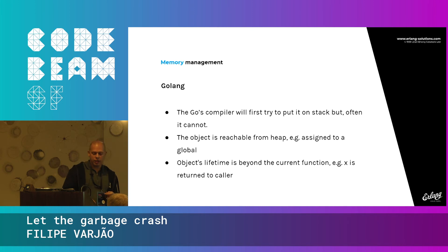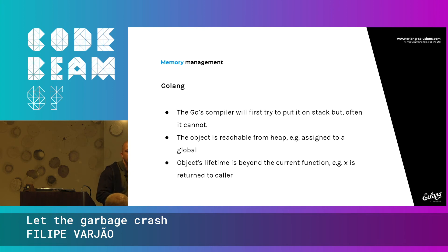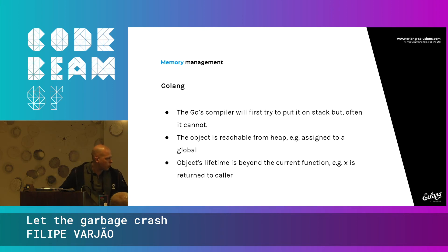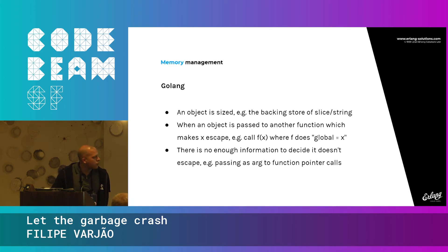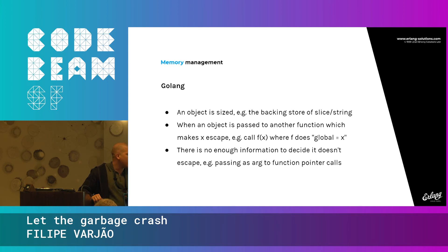Golang does very powerful code analysis at compile time, trying to place objects on the stack when possible. But often it can't determine the lifetime, so it puts them back on the heap for the garbage collector. Objects are moved to the heap when they escape their scope, when passed to functions, when dealing with constants, or when the object size requires it — that's when the GC takes over.